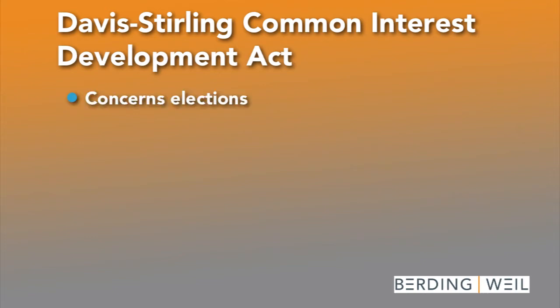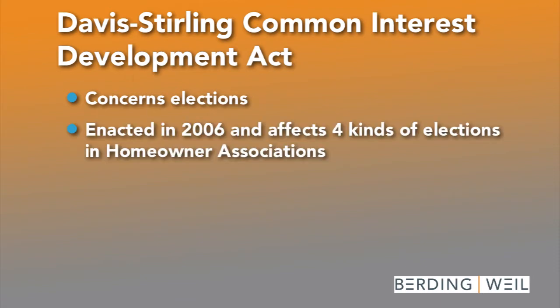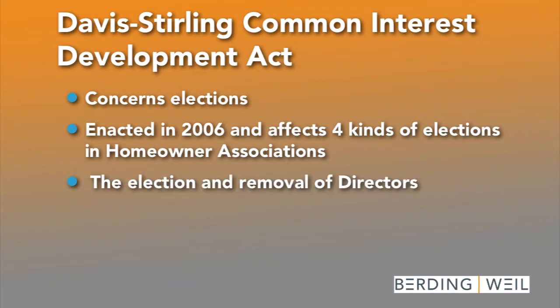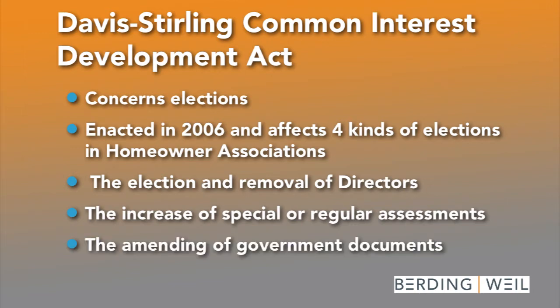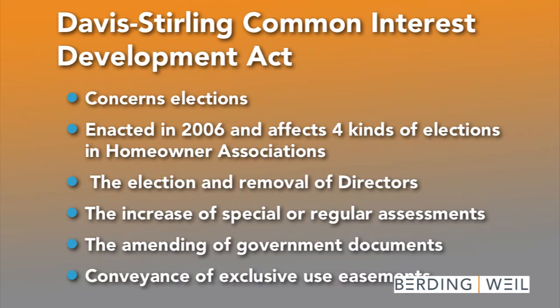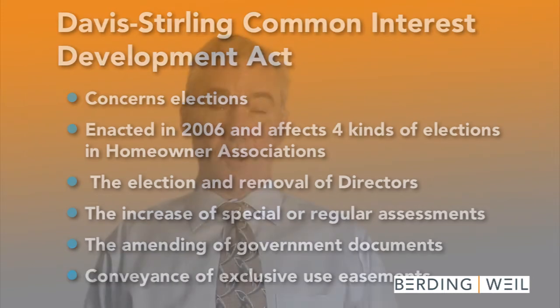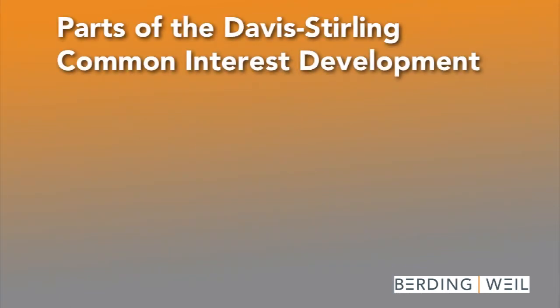It's a phenomenally complicated piece. The legislature enacted a law in 2006 affecting four of the main kinds of elections in homeowner associations: the election and removal of directors, the increase of special assessments or the increase in regular assessments, the amending of governing documents, and the giving away of common area. The law was so complicated that the legislature almost immediately recognized it, and the law was changed almost right after it was enacted, back in 2006.